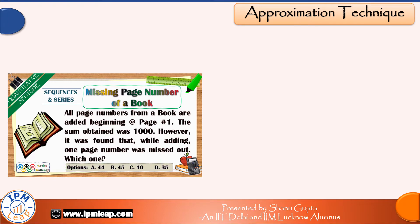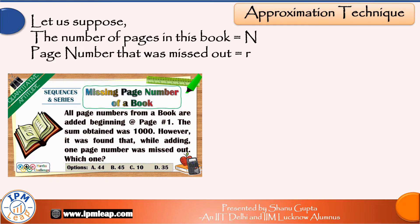We are given some options. So first of all, let us suppose that the number of pages in this book is equal to n, and the page number that was missed out is equal to r. Clearly r is a page in between, so r should be ≥ 1 and ≤ n. So forming an equation: (1 + 2 + 3 + 4 + ... + n) - r = 1000.